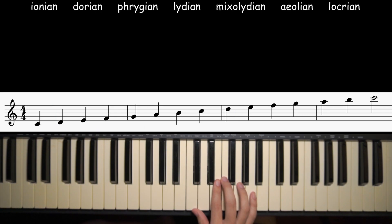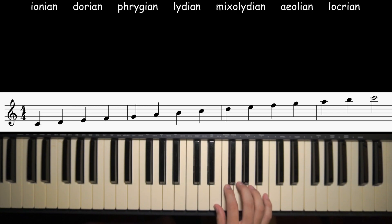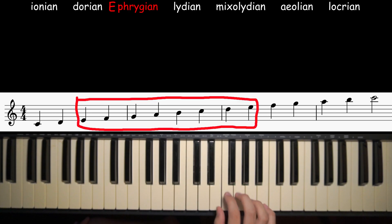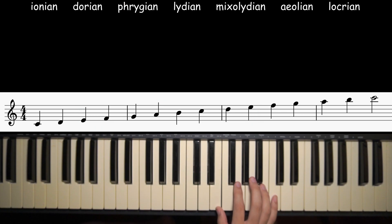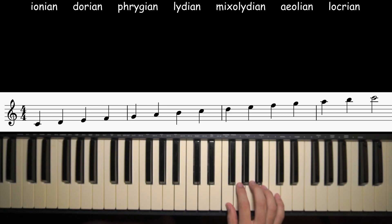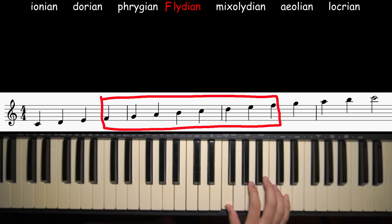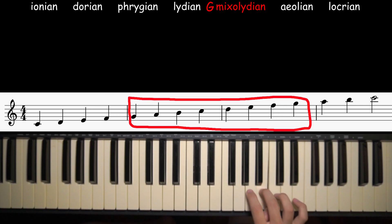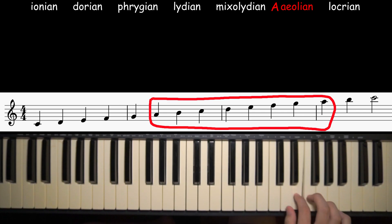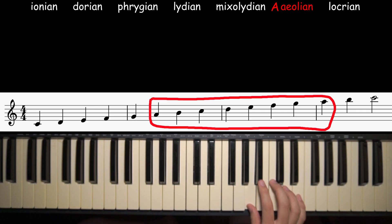If we start and stop on the third degree, still playing all the notes of C major, we're going to be playing E Phrygian. And you get the idea — if we start on the fourth degree of C and play the notes of C, we're going to get F Lydian. Fifth degree is G Mixolydian. Sixth is A Aeolian, a.k.a. A minor. And finally, seventh is B Locrian.